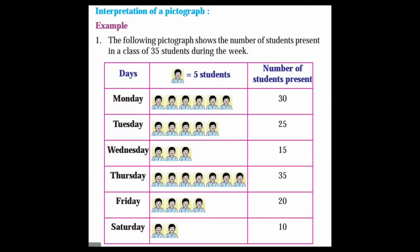Next is interpretation of a pictograph. Example: The following pictograph shows the number of students present in a class of 35 students during the week. Here 1 picture of a student is equal to 5 students.